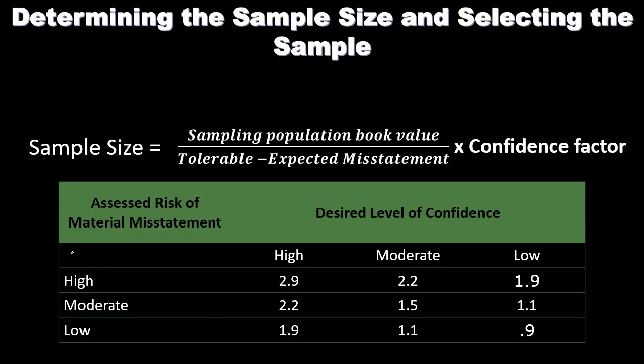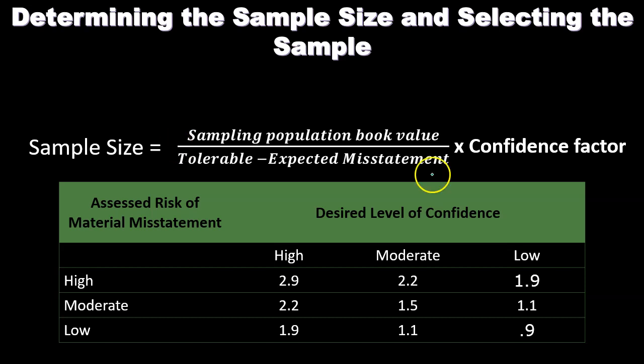Determining the sample size and selecting the sample — how do we determine what the sample size is? The formula is: sample size equals the sampling population book value divided by tolerable misstatement minus expected misstatement, times a confidence factor. So the sampling population book value is divided by the difference of tolerable misstatement minus expected misstatement, and that result is multiplied by the confidence factor.